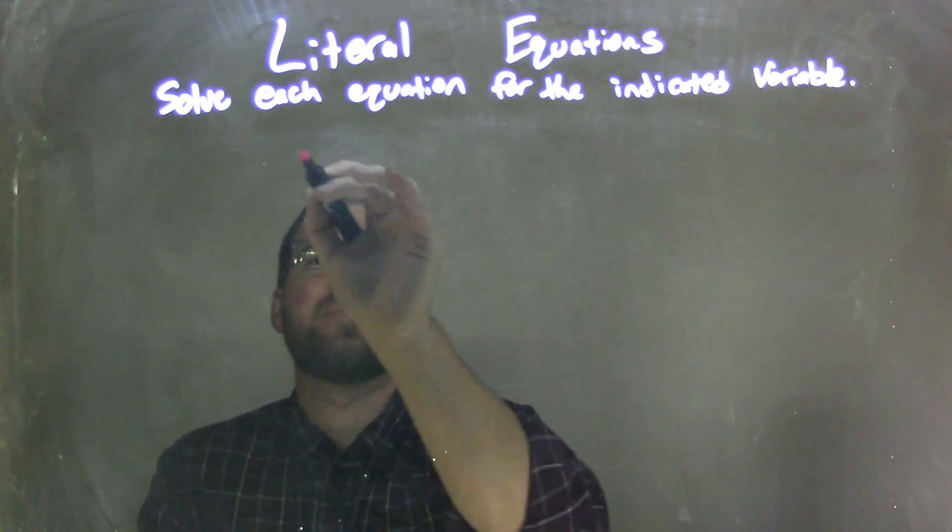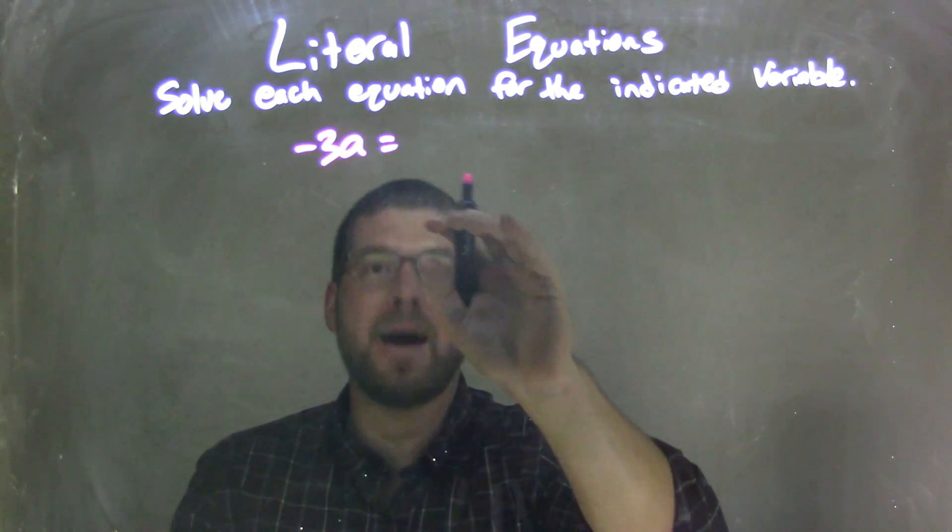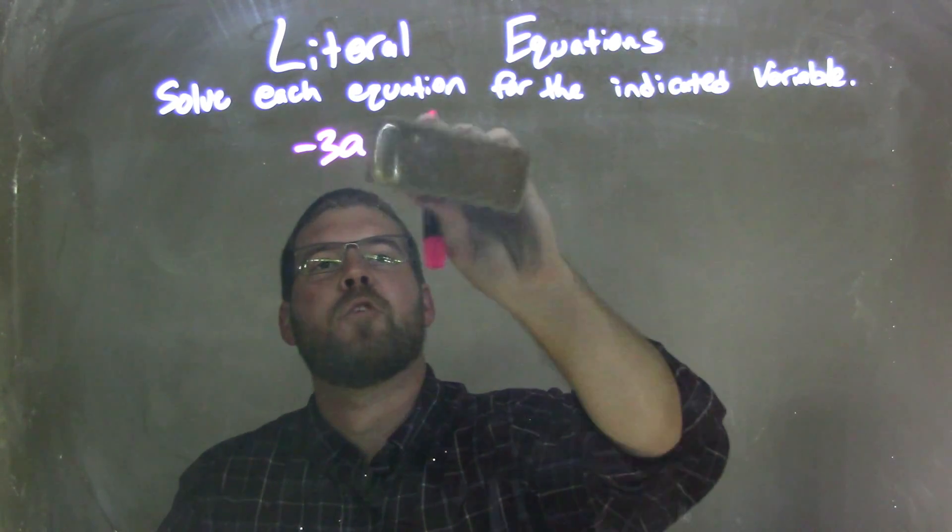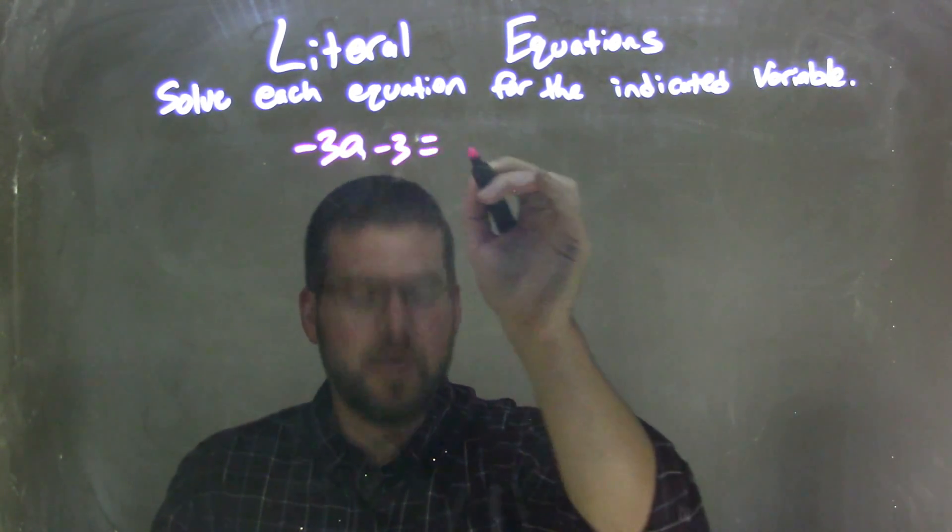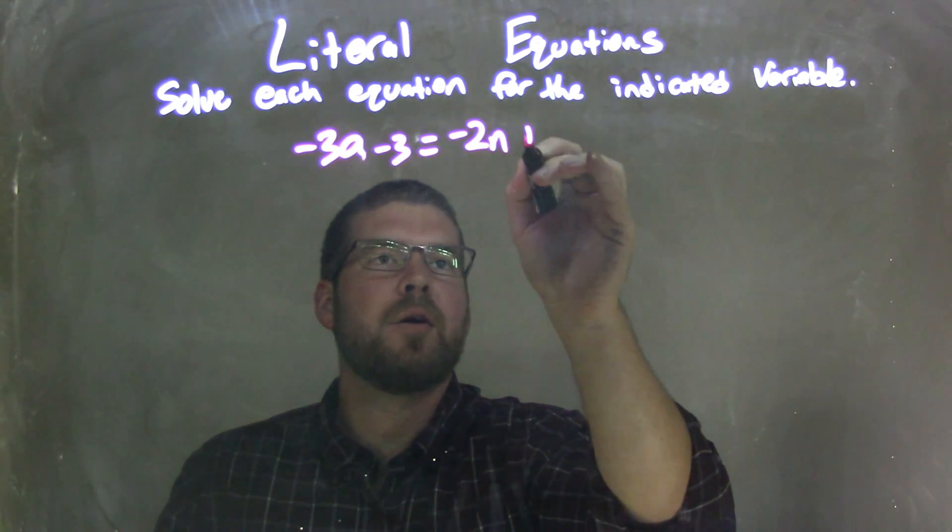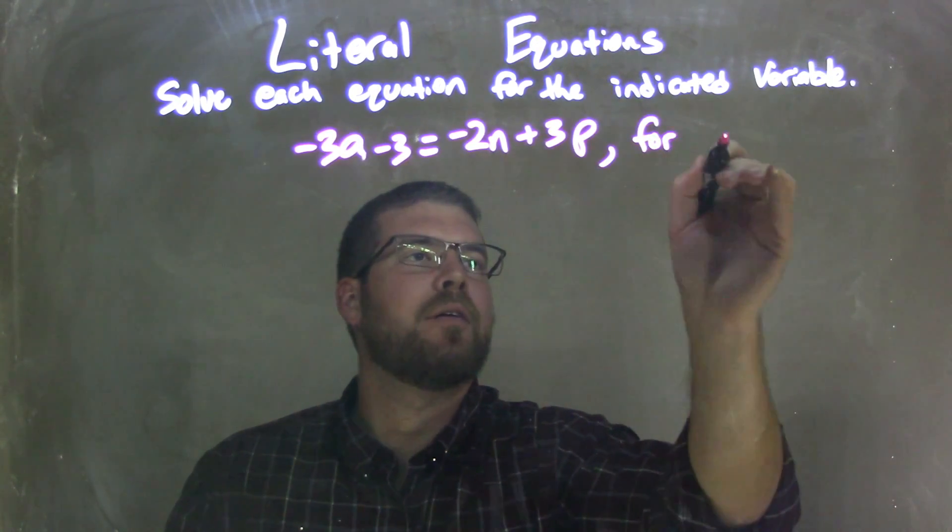So if I was given this equation, negative 3a... oh sorry, negative 3a minus 3, I'm sorry. Got ahead of myself here. Got trigger happy with the equal sign. Minus 3 equals negative 2n plus 3p, and we're going to solve that for the letter a.